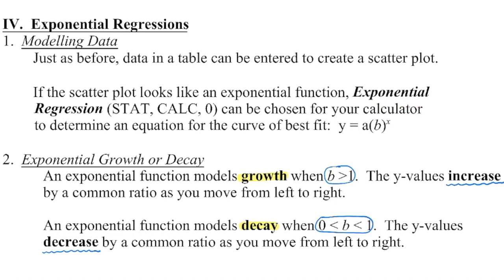The equation form is y equals a times b to the power of x, which we use for exponential growth or decay. We know it's going to be an exponential growth function anytime b is greater than one. So if this base is greater than one, our function is growing, and as we move across the graph we're multiplying those values by the same ratio every time.